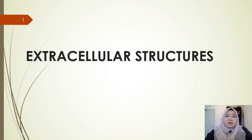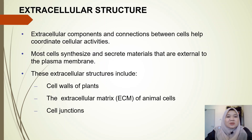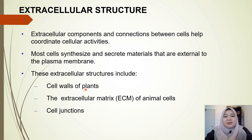So far we've discussed all the structures on the inside of our cell, so now we're going to look at what structures we have on the outside of our cell. Extracellular structures are components and connections between cells that help to coordinate cellular activities. Most cells synthesize and secrete materials that are external to the plasma membrane, and these materials form our extracellular structures.